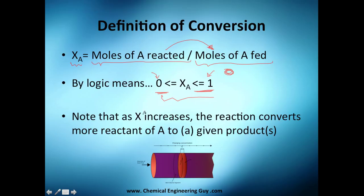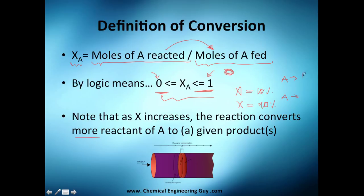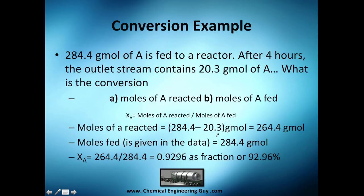As X increases, the reaction converts more of reactant A into a given product. For example, if you have a conversion of 10% and I have a conversion of 90%, which gave more product? The one at 90%, because 90% of A converted to B versus only 10%. So keep in mind: the higher the conversion, the higher the products.